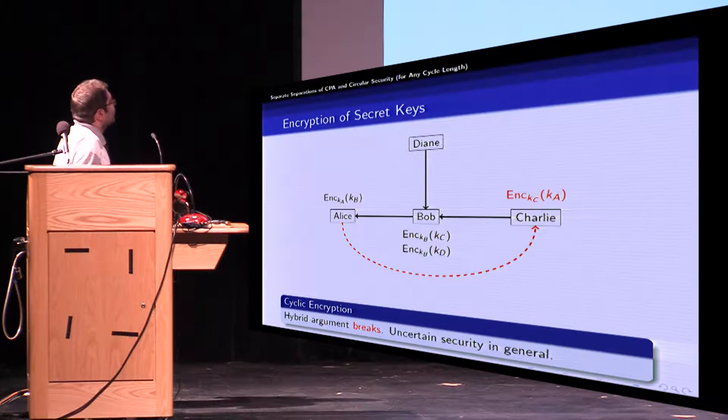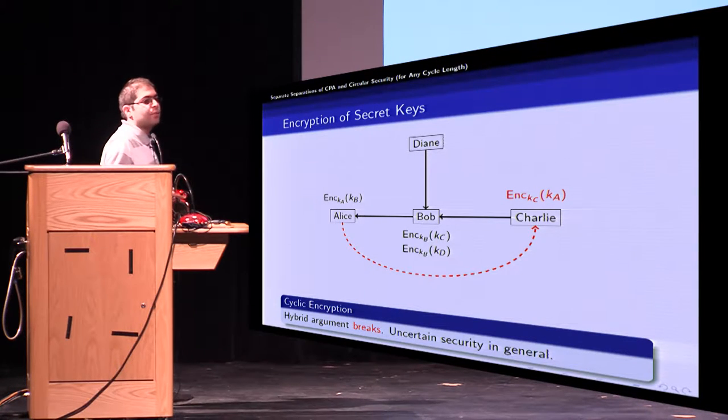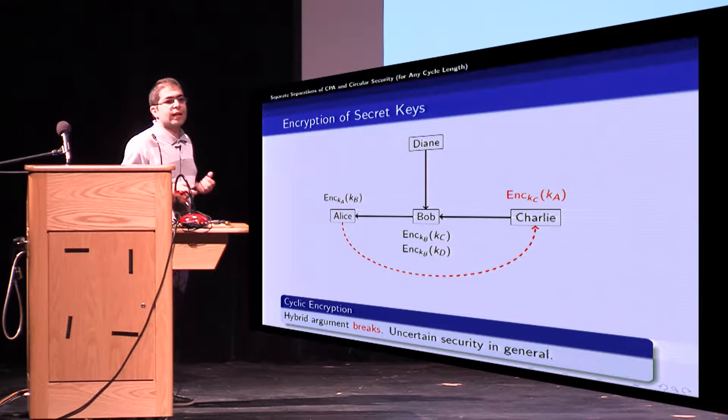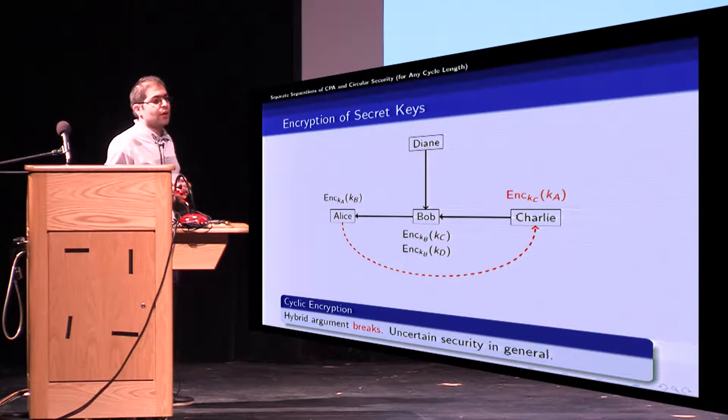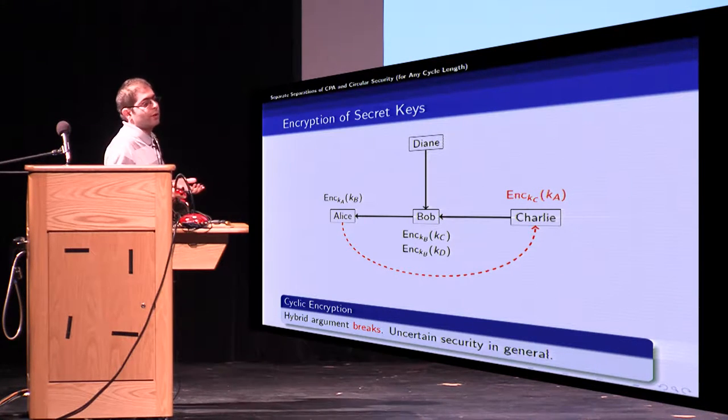To answer the question what if we have a cycle, it turns out that hybrid argument breaks in this setting and we have uncertain security in general. So it might be secure or it might not be.